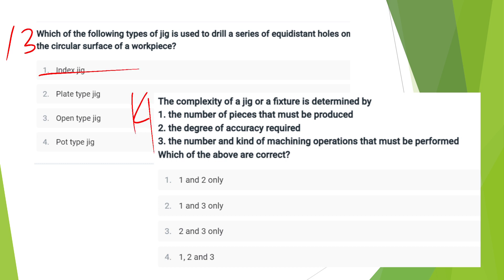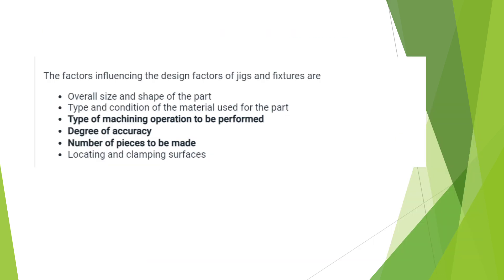The complexity of a jig is determined by: the number of pieces that must be produced, the degree of accuracy required, and the number and kind of machining operations that must be performed. Design factors for jigs and fixtures include: overall size, shape, type, material used, type of machinery, degree of accuracy, number of pieces to be made, and location and clamping surfaces.